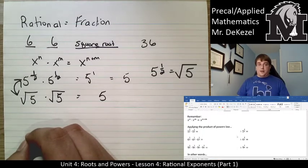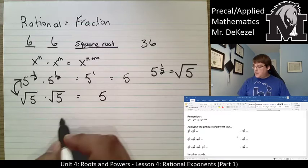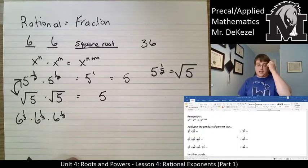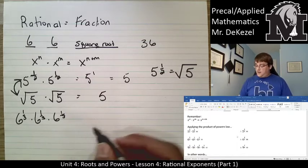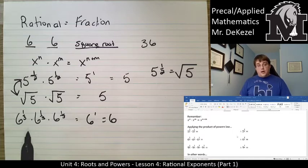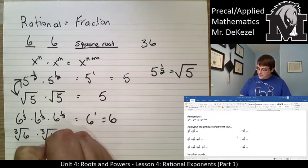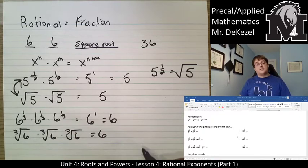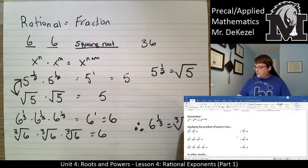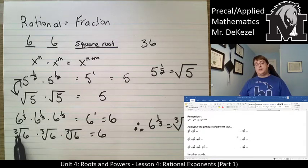We can do the same thing with a third root. If we have a third root of something, that means we need to multiply something by itself three times. So if we have six to the power of a third times six to the power of a third times six to the power of a third — applying the products of power law, we add up all the exponents and that equals six to the power of one, which is six. So what three things multiplied together would also get us six? The third root of six times the third root of six times the third root of six also equals six. Therefore, six to the power of a third is equal to the third root of six. Anytime you have a fraction, you take the bottom number and that's the index of your root.